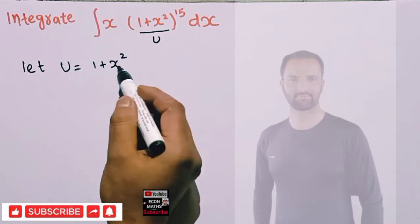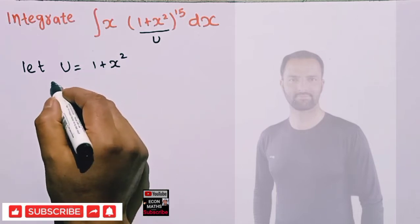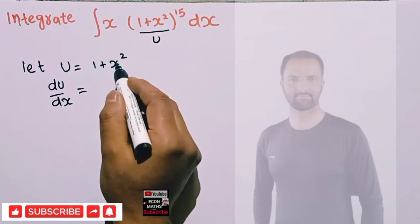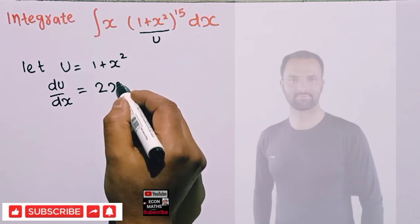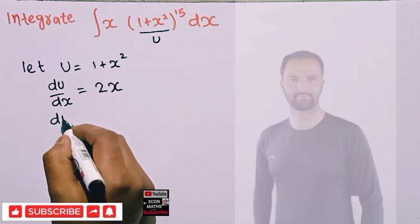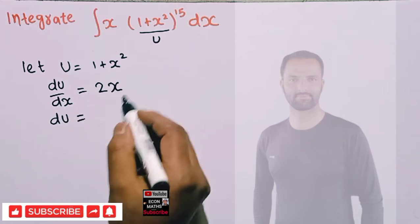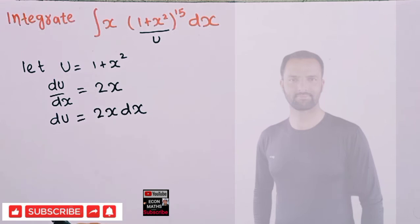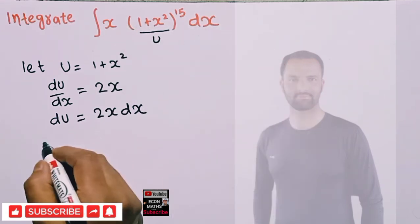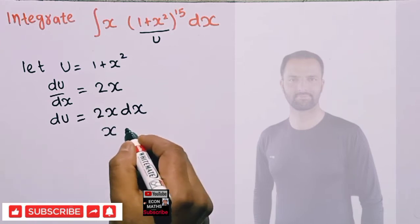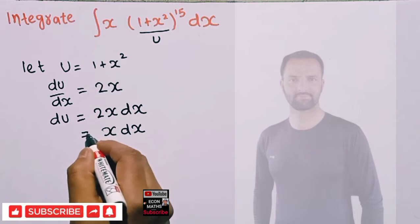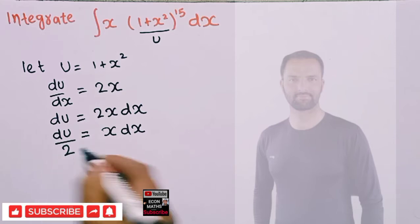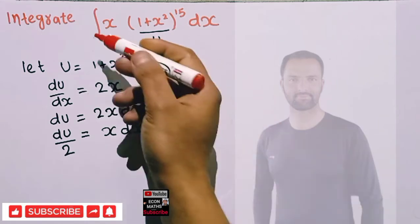In the substitution method, we differentiate u with respect to x, so du upon dx is equal to — the derivative of the constant is 0, and the derivative of x squared is 2x — so we get 2x. We can write this as du equals 2x dx. We need x dx here, so we can write x dx equals du upon 2.